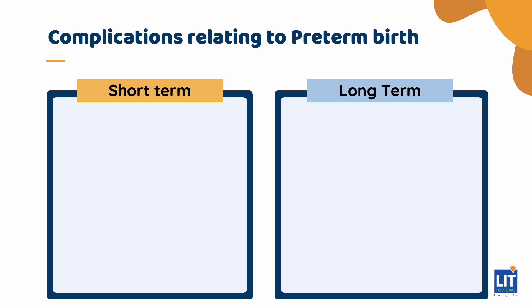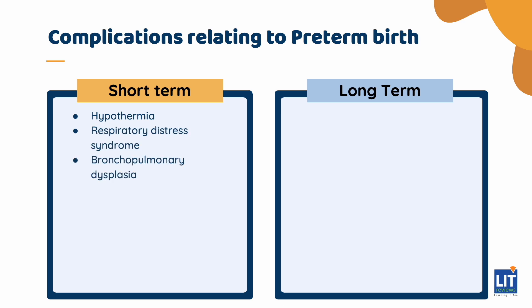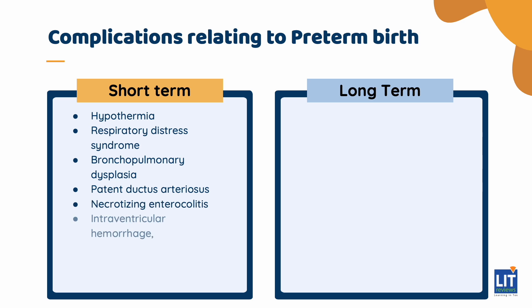Short-term complications include hypothermia, respiratory distress syndrome, bronchopulmonary dysplasia, patent ductus arteriosus, necrotizing enterocolitis, intraventricular hemorrhage, neonatal sepsis, and retinopathy of prematurity.